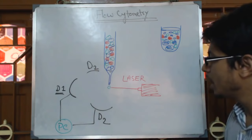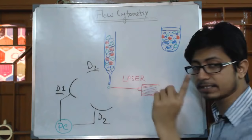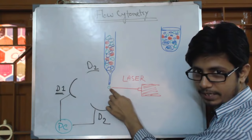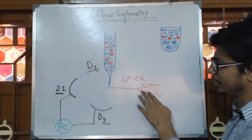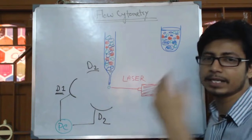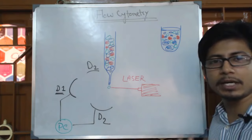The idea is that each cell passes one at a time, and the laser beam hits that cell — just like counting with a laser: 1, 2, 3, 4, 5. Whenever the laser interacts with a cell, it registers one count, then the next cell is count 2, and so on. That is how you get the number of cells.